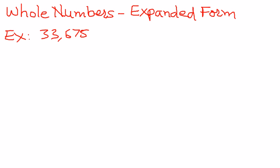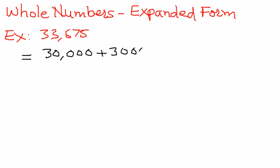Well, the way we want to write this one out is as follows. We want to write it as 30,000 plus 3,000, plus 600, plus 70, plus 5.